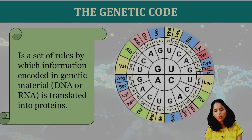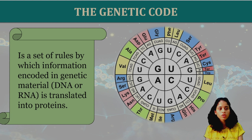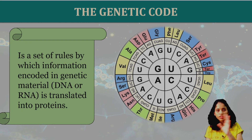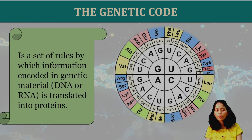So how do we define genetic code? It is a set of rules by which information encoded in genetic material — whether DNA or RNA — is translated into proteins.